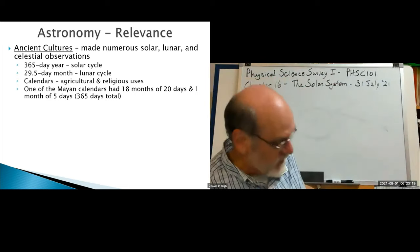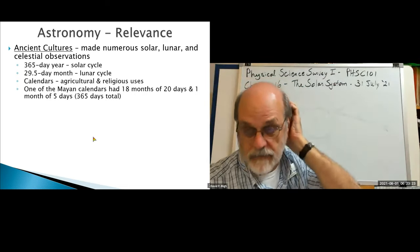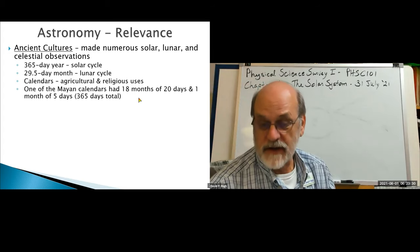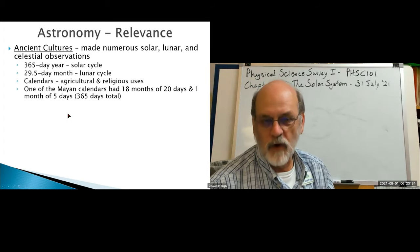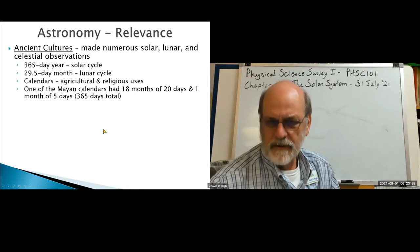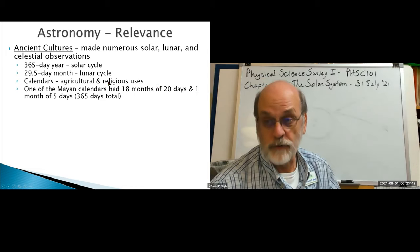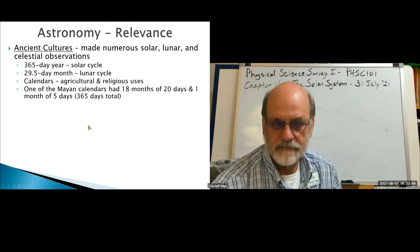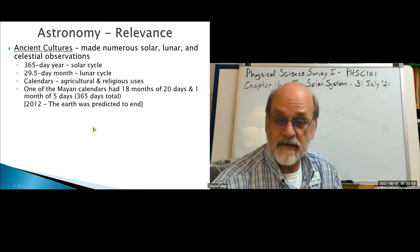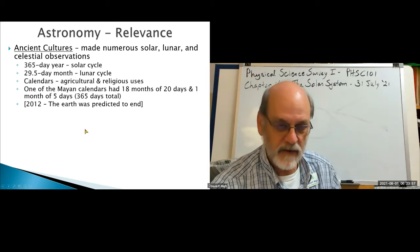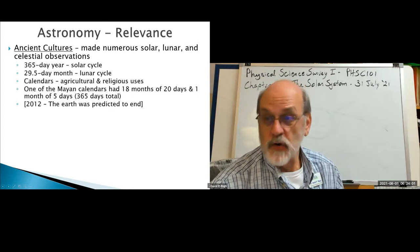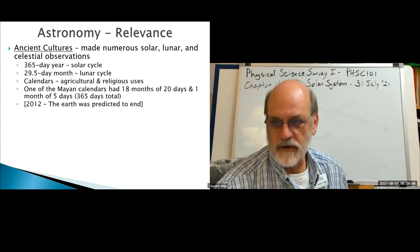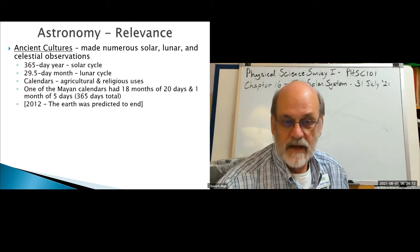They noted the seasons — we know now they occur because of the Earth's tilt, as covered in Chapter 15. One of the Mayan calendars had 18 months of only 20 days each, plus one extra 5-day month, which was unusual since in 20 days the moon doesn't complete a full cycle. They did predict the Earth would end in 2012 based on the Mayan calendar — somebody made a movie and a lot of money — but the Earth didn't end.